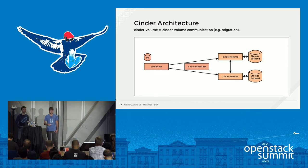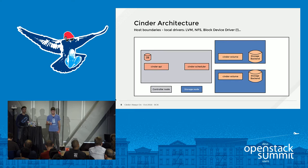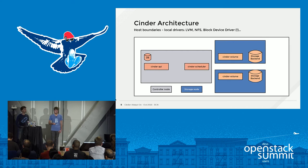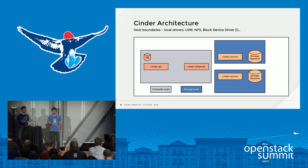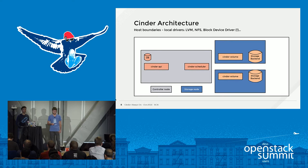Sometimes Cinder volume instances can communicate with each other, for example in the case of volume migration. These are typical host boundaries in a Cinder deployment. Cinder API and Cinder scheduler are considered control plane services and are normally placed in the controller node. When running local drivers like LVM or NFS that need local storage access, you run them on the same physical storage node.